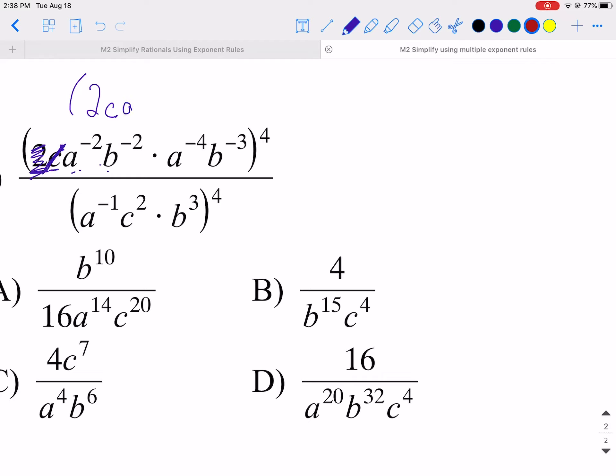Next, I'm going to write my A. Notice I'm just going in order that it appears. So just take it step by step. A negative 2. Notice I'm multiplying the same base. When I have the same base and I'm multiplying, I add exponents. So negative 2 plus a negative 4 is a negative 6. So my A's are done. Then I write my B. I've got a negative 2 here and a negative 3. Negative 2 plus negative 3 is a negative 5, all raised to the power of 4. I've just rewrote my numerator.